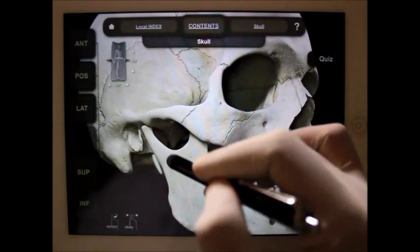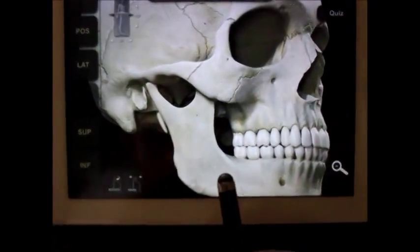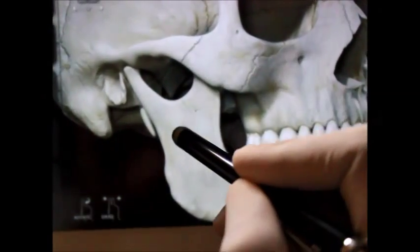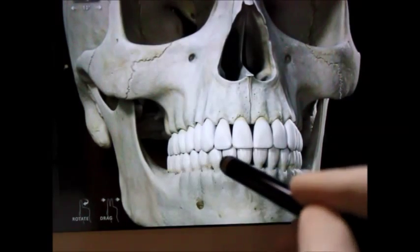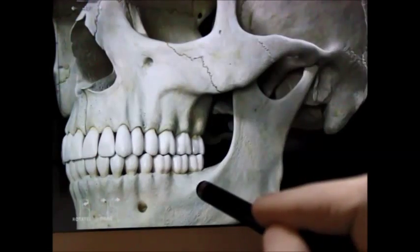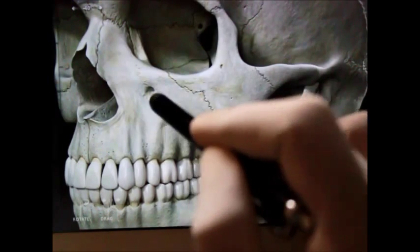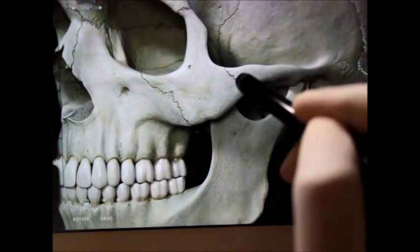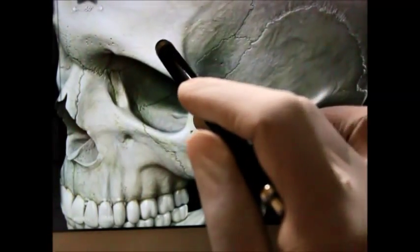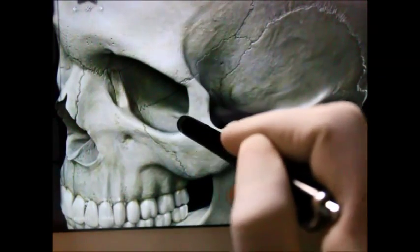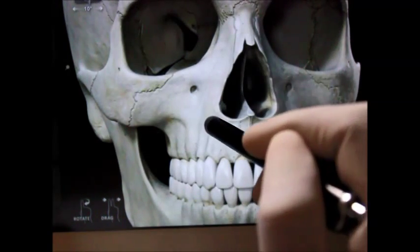Here we have the mandible with the ramus of mandible, angle of mandible, and body of mandible with teeth from the alveolar process. We have the zygomatic bone attached to the maxilla posteriorly with temporal bone and superiorly attaching with the frontal bone.